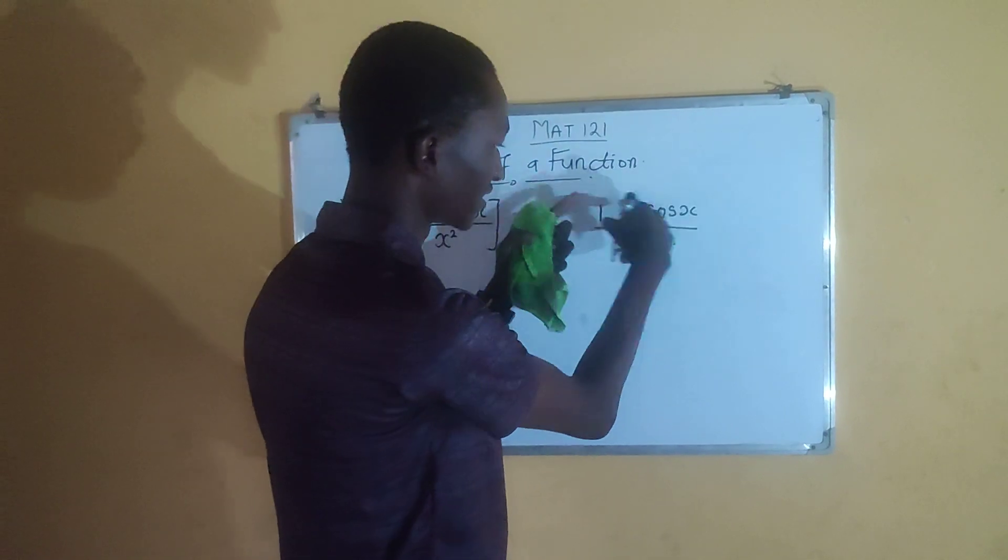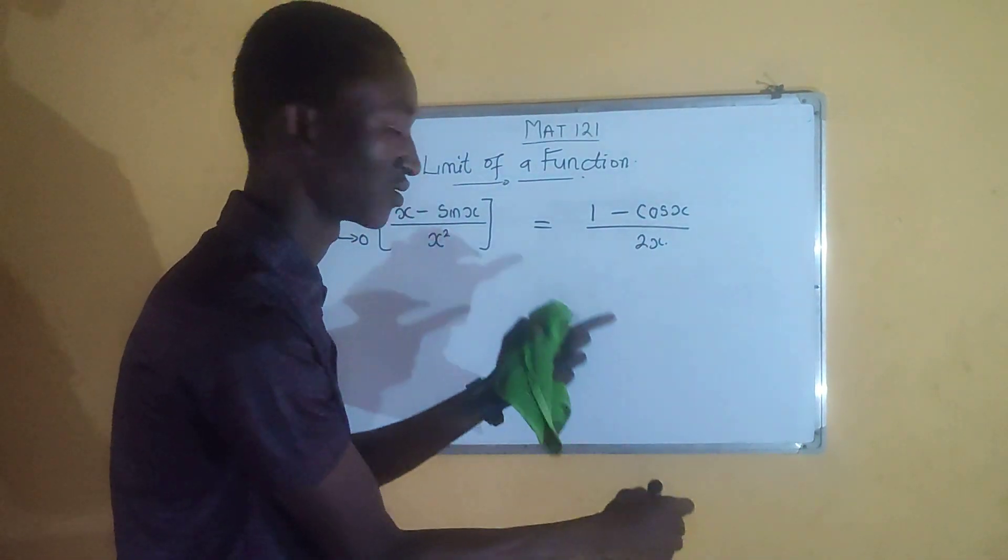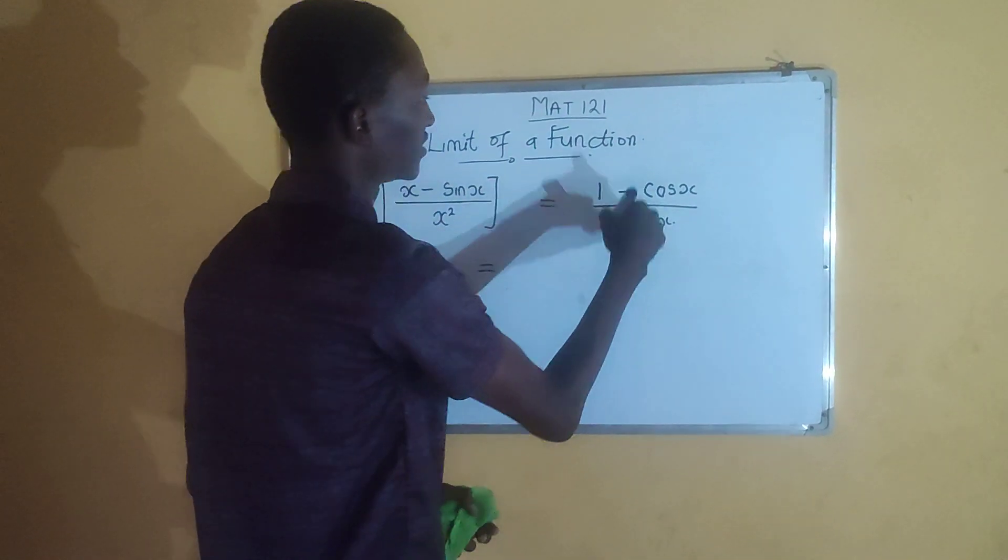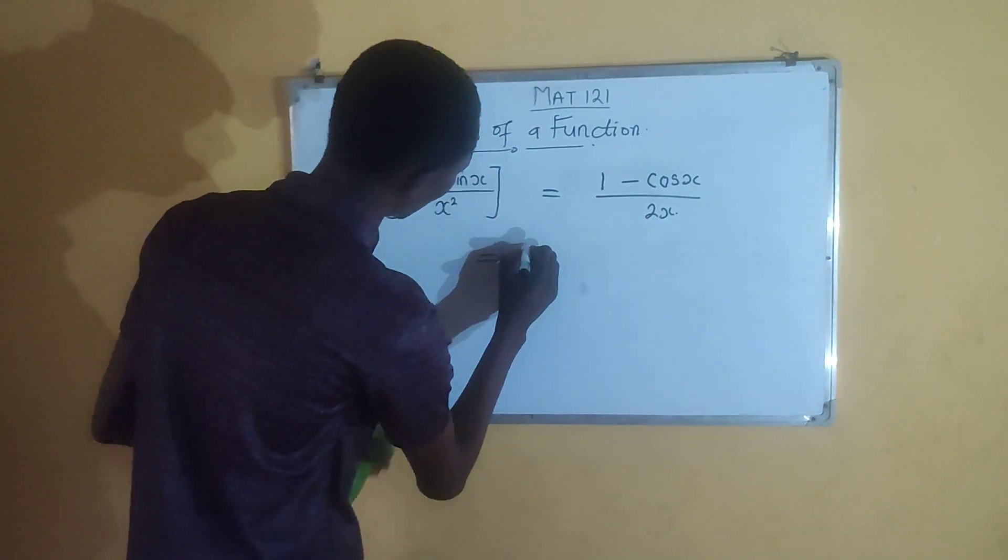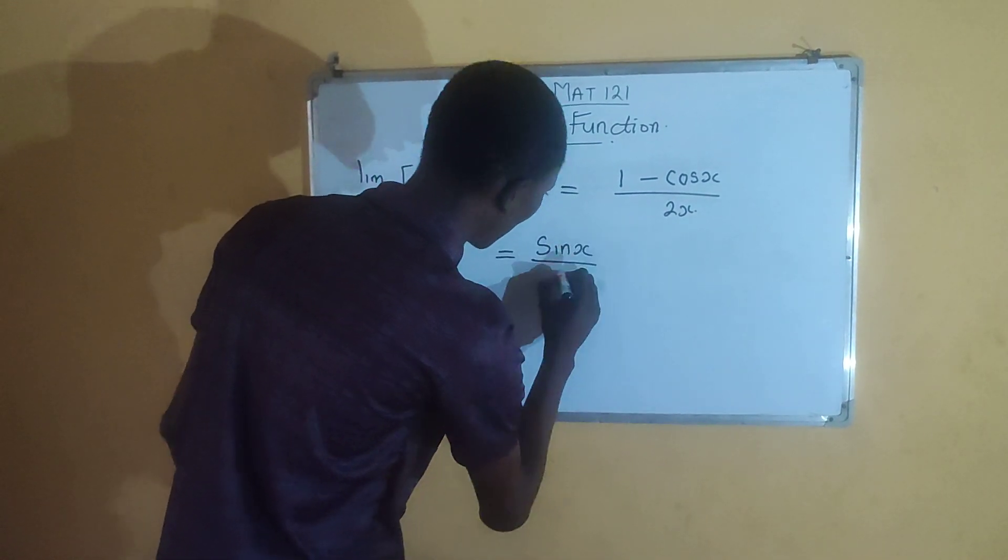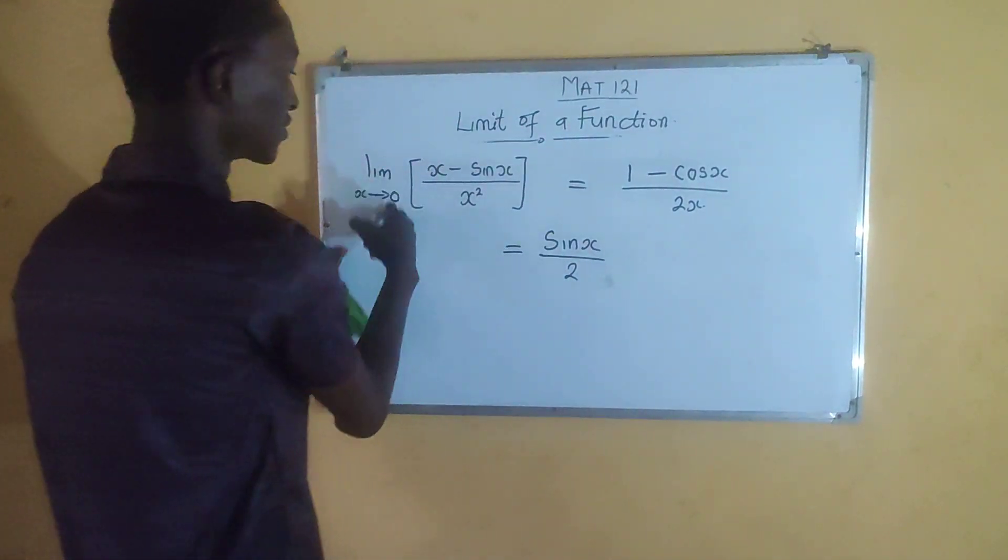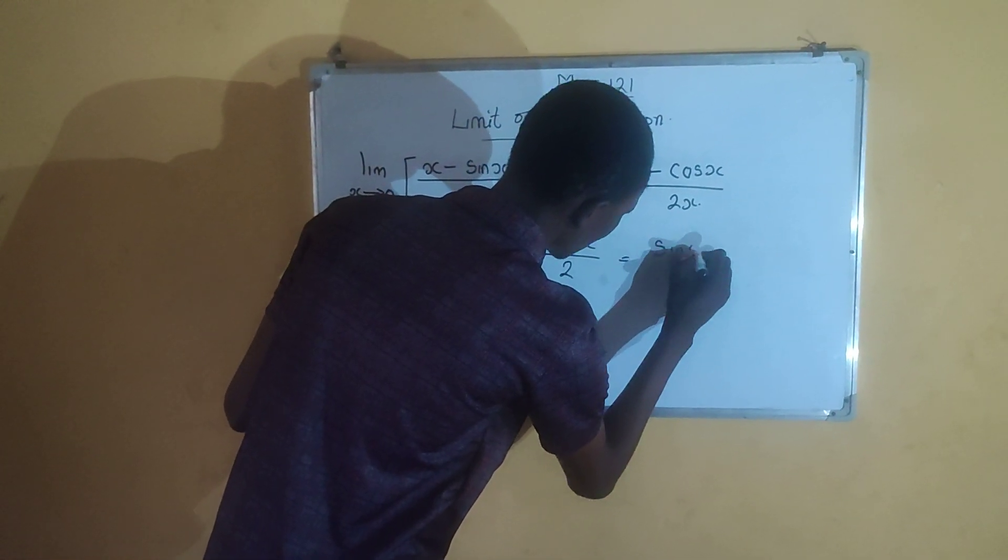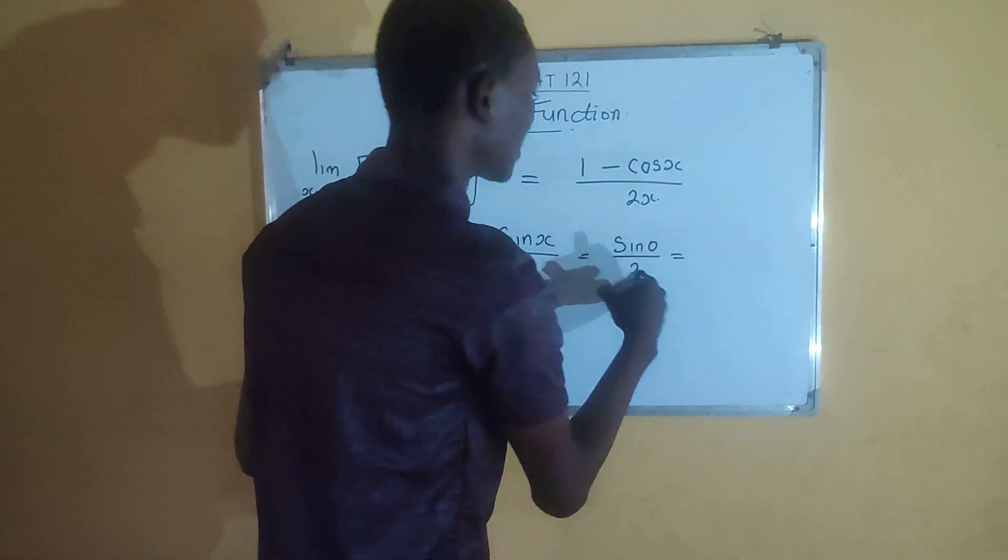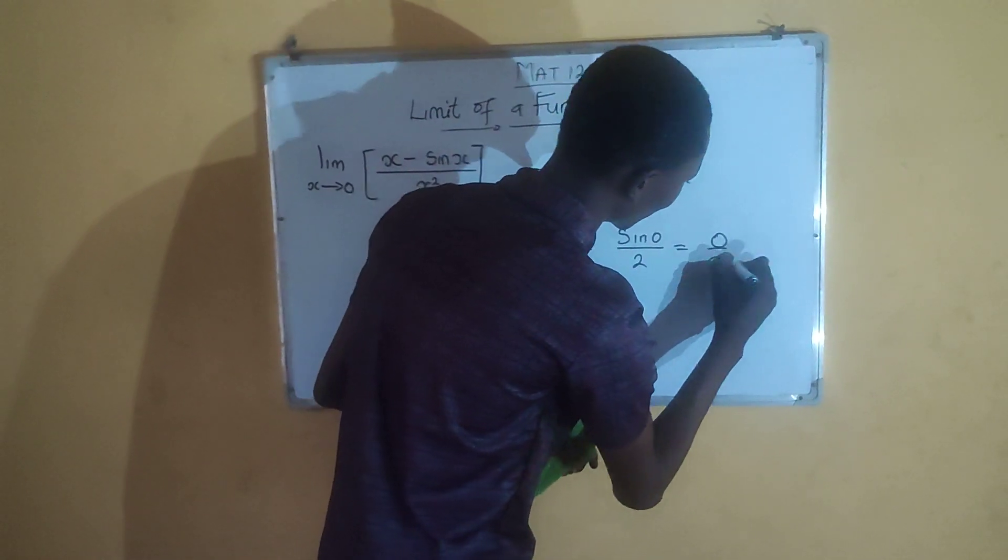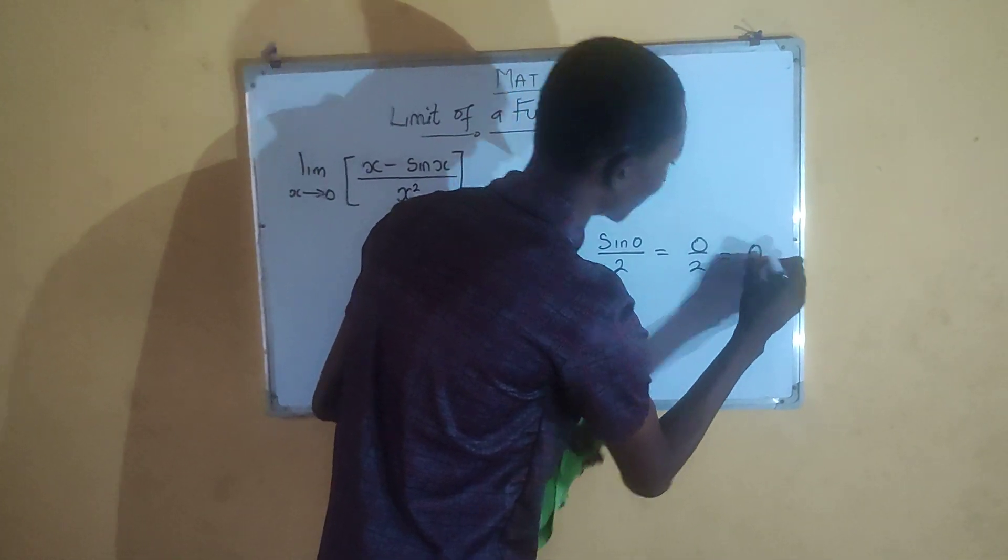which says you should differentiate this whole function again. When you differentiate 1, you have 0. And when you differentiate minus cos x, you have sine x. So for this, you have sine x all over 2. So now you can put 0 into this, so that you say sine 0 all over 2. And sine 0 is equal to 0 all over 2. And the final answer is 0.